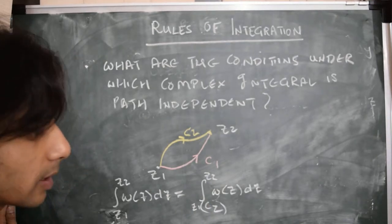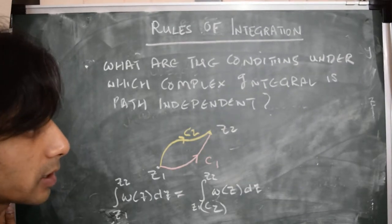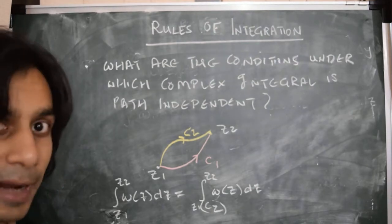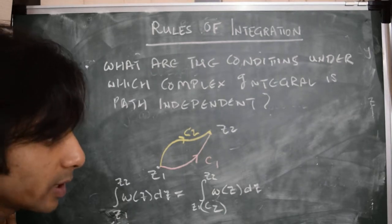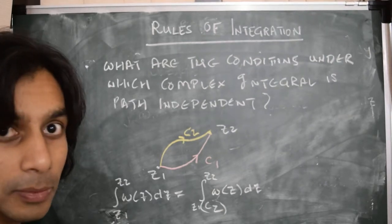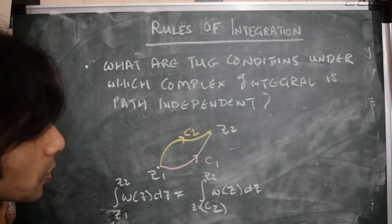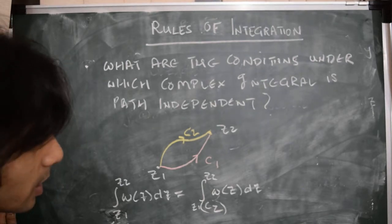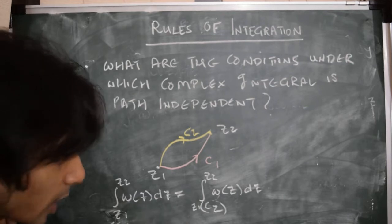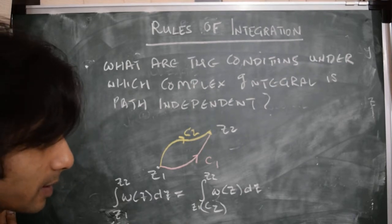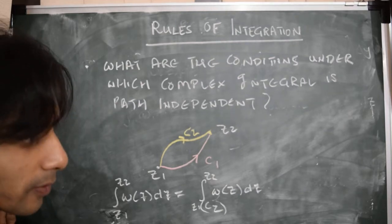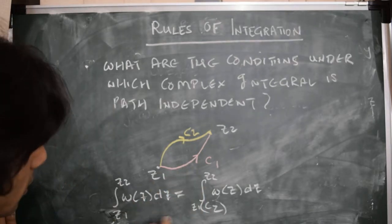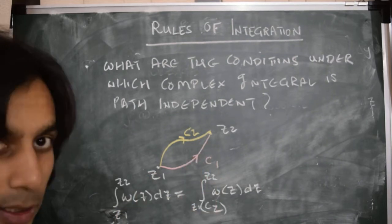The reason this is important is that if there are conditions under which the integral is independent of the path, it means we can define something like the anti-derivative of a complex function, which would be analogous to the fundamental theorem of calculus. In order to understand what these conditions are, let's use the rules we've just figured out to recast this problem in a neater way. The integral being independent of the path means the integral along c1 equals the integral along c2.